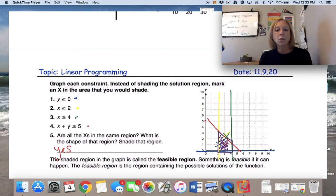And then it asks, what is the shape? Well, I have one set of parallel sides, these vertical lines. So it would be a trapezoid shape. And we would call this the feasible region.